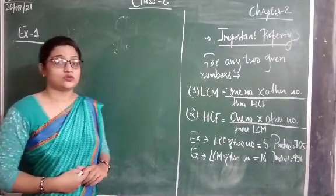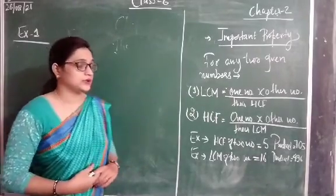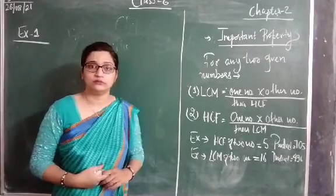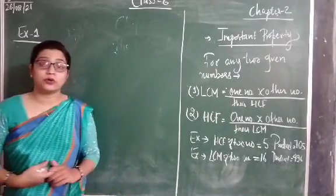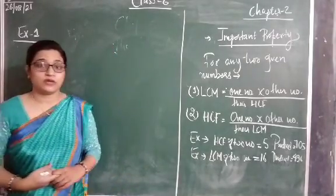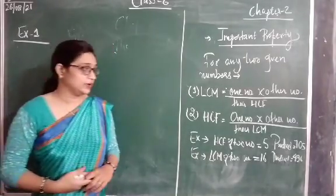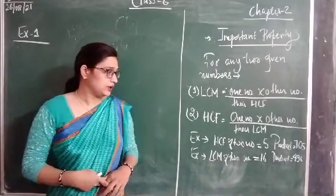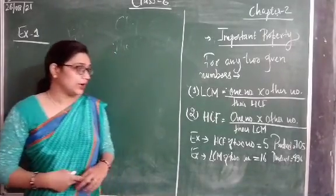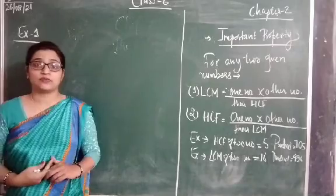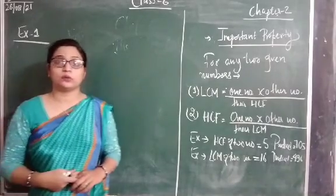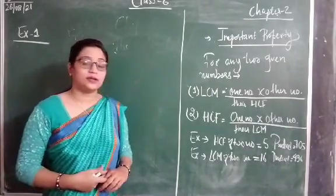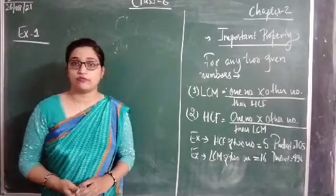In the first example, the HCF of two numbers and their product are given, and we have to find the LCM. In the second example, the LCM of two numbers and the product of the two numbers are already given, and we have to find the HCF.